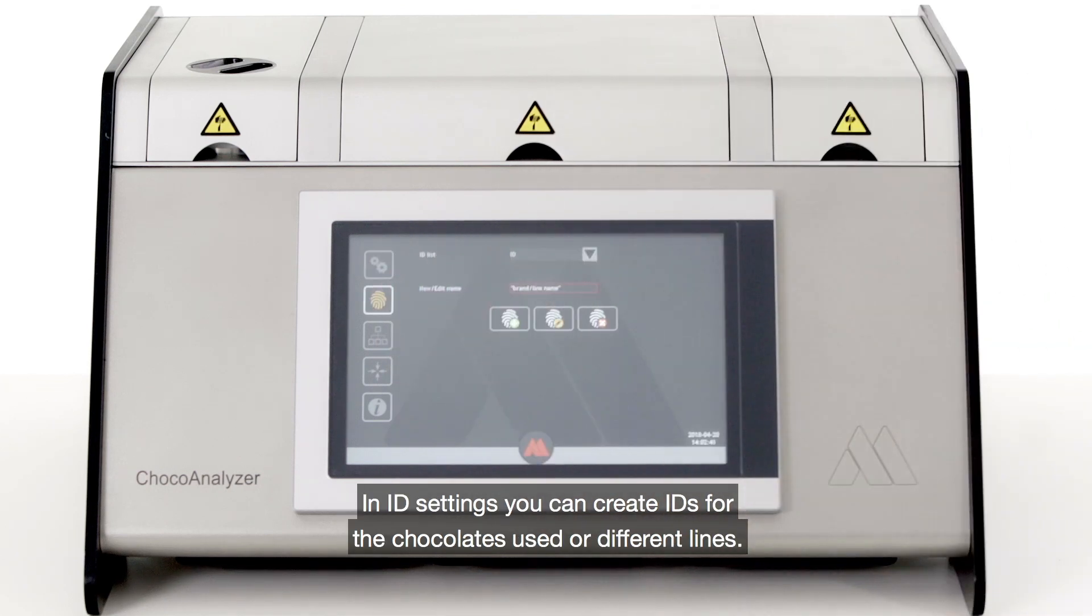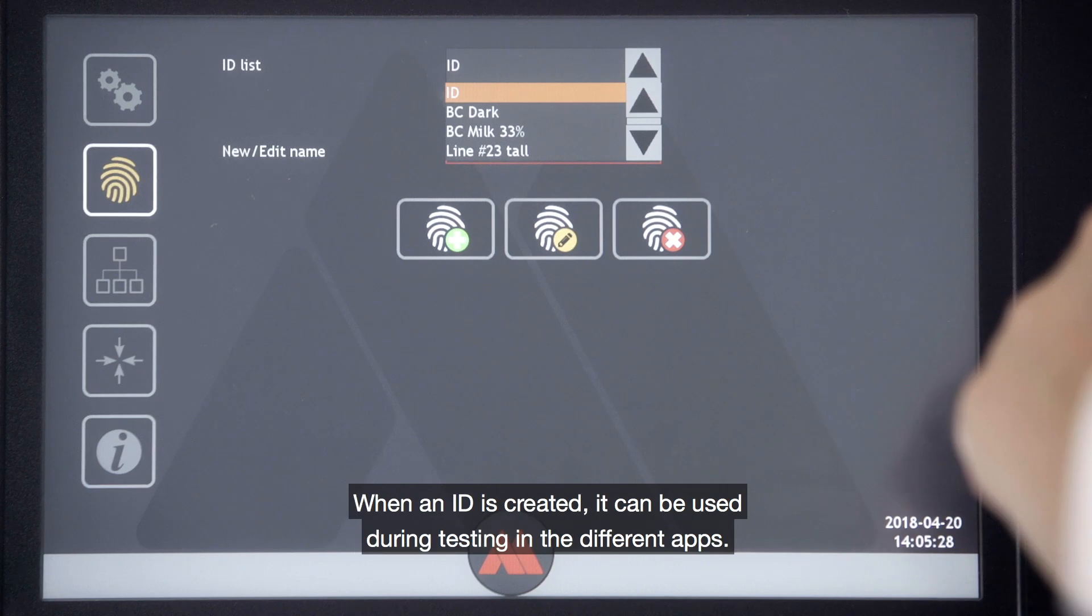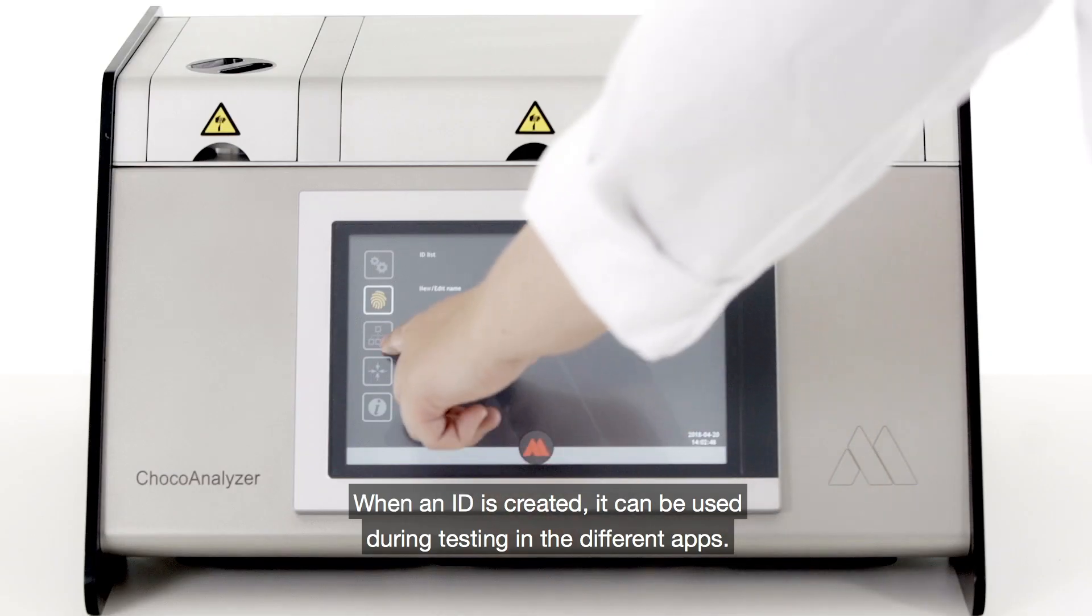In ID settings you can create IDs for the chocolates used or different lines. When an ID is created it can be used during testing in different apps.